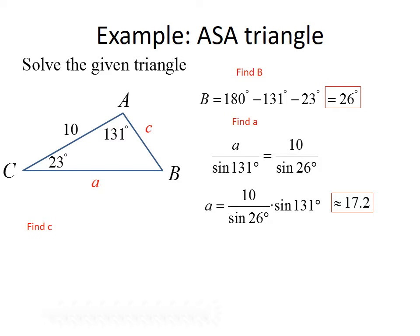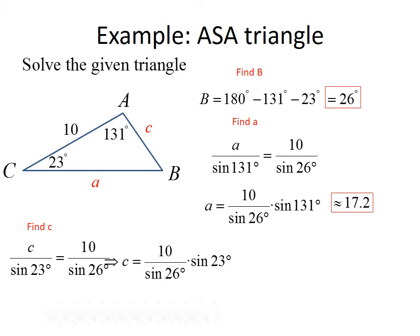Finally, we find side c using the same approach. Using the Law of Sines: c divided by sine of 23 equals 10 divided by sine of 26. Multiplying both sides by sine of 23, we get c equals 10 over sine of 26 times sine of 23, which evaluates to approximately 8.9 units. That completes solving this triangle.